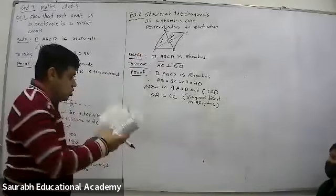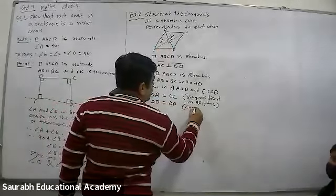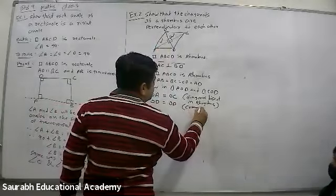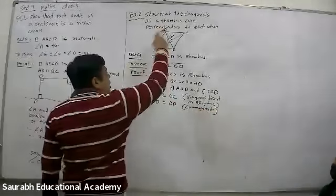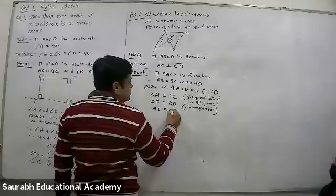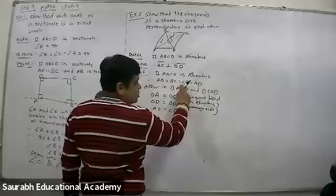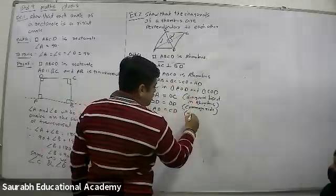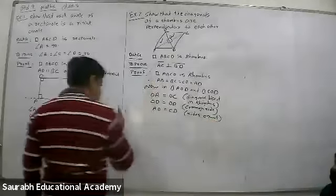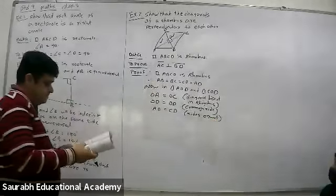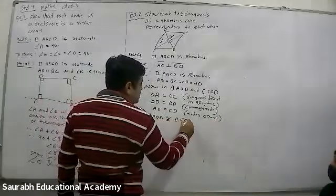So AO equals to OC. Second, OD common side. OD common or same. OD equals to OD. And here AD equals to CD. Measurement same. Right? We have written AD equals to CD. Therefore, this two triangles: triangle AOD congruent triangle COD.